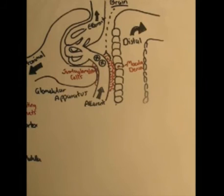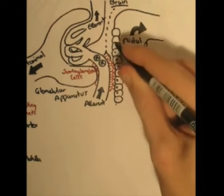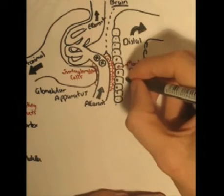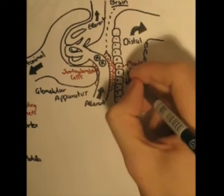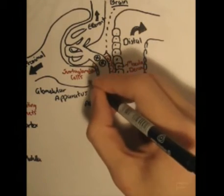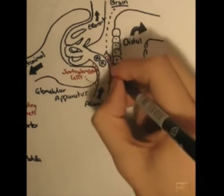For example, it can detect low blood pressure with low sodium or low chloride molecules. And if it senses these low amounts, it sends signals. The macula densa cells send signals to the juxtaglomerular cells to secrete renin.